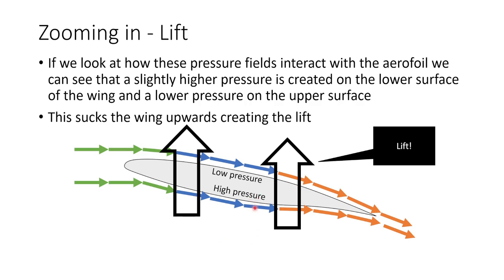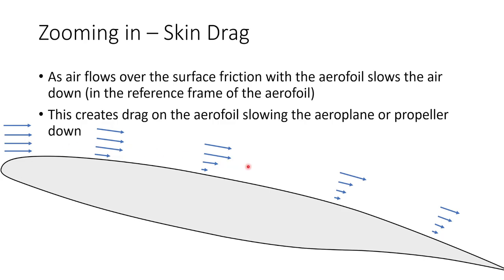With a propeller we still get lift, but we typically call it thrust. The physics is exactly the same. As air flows over the surface of an aerofoil, we get friction between the air and the surface, which slows the air down in the reference frame of the aerofoil. This creates drag on the wing, slowing the aeroplane or propeller down. That is why we constantly need to input energy into the system — why planes need engines and propellers need motors to continually apply torque to keep them spinning.